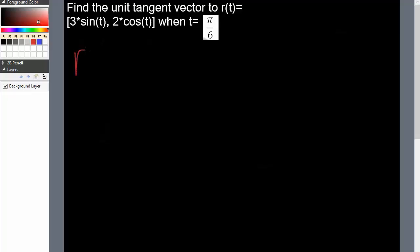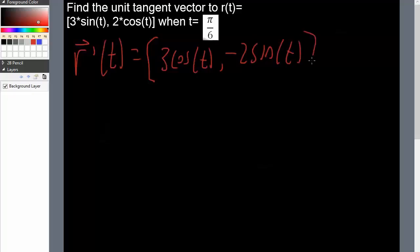And when we do this we would get 3 sine t, the derivative is 3 cosine t, comma 2 cosine t, derivative is gonna be negative 2 sine t.